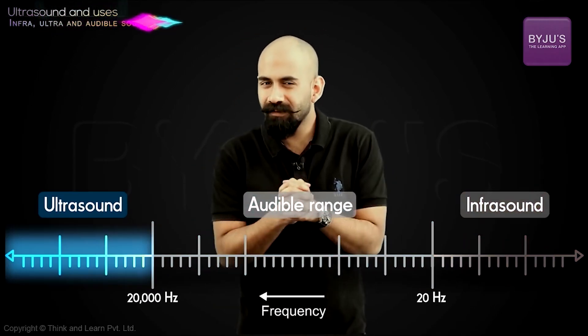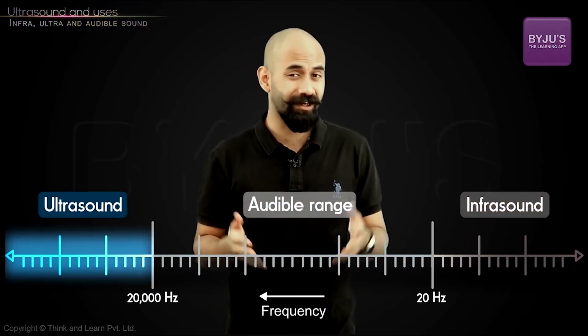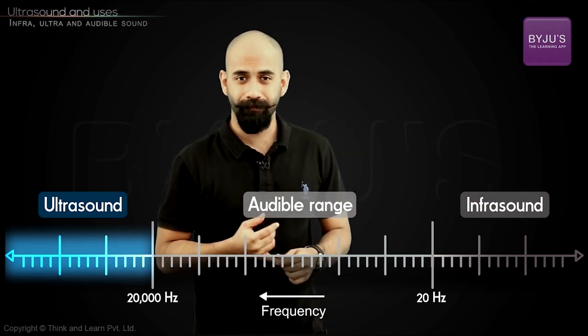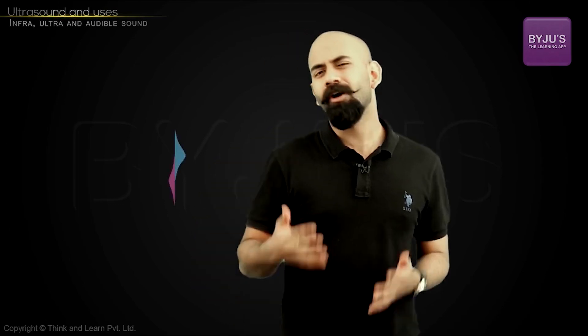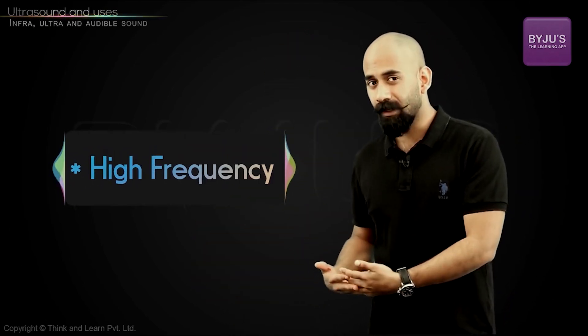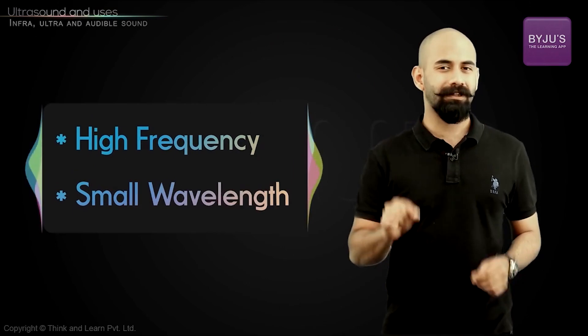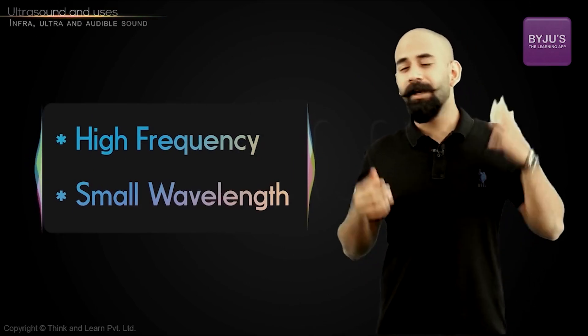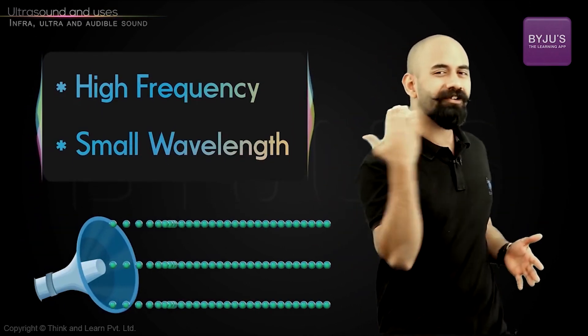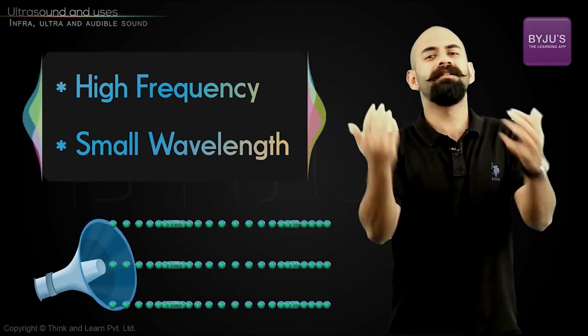Now ultrasound has certain specific properties and use cases because of those properties. The first property is that it has very high energy because it has a high frequency. Number two, it has a small wavelength. Because of this, these waves tend to travel in a straight line and don't bend around obstacles.